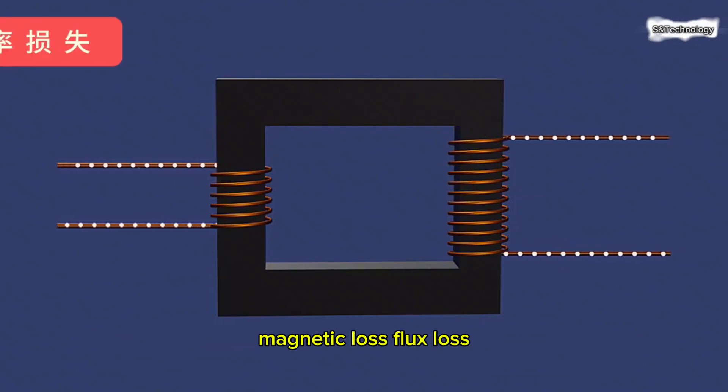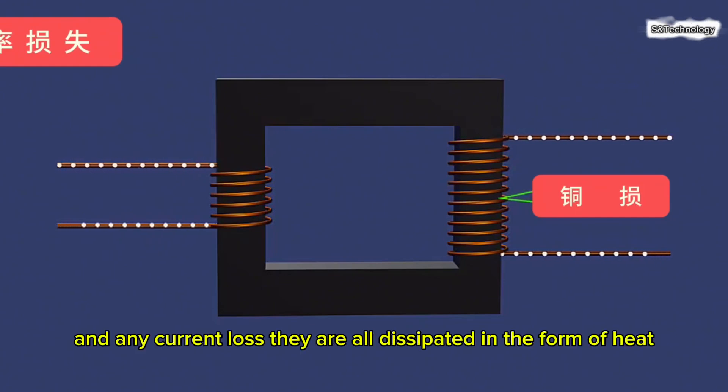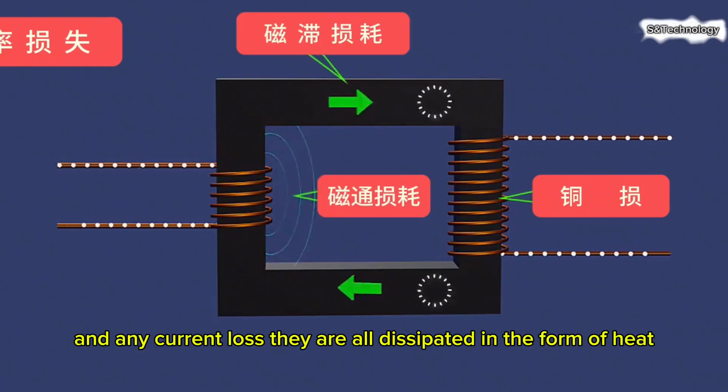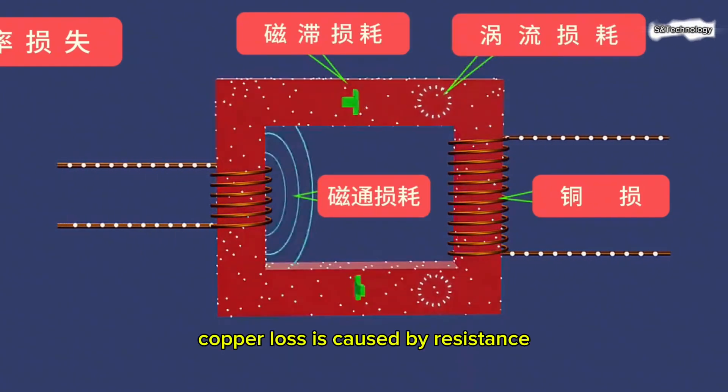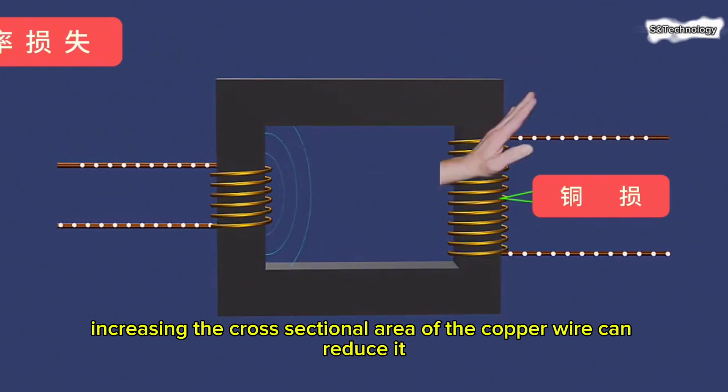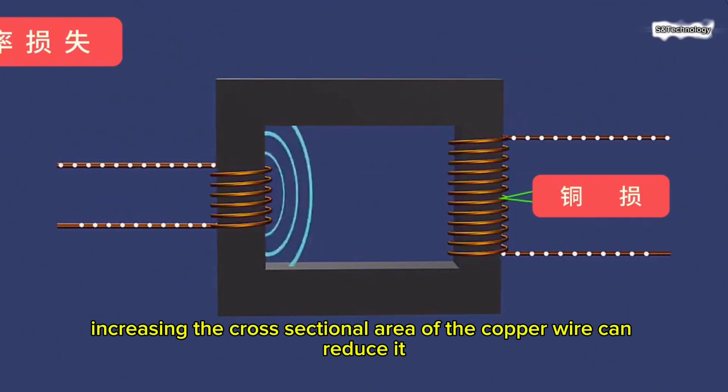Power loss includes copper loss, magnetic loss, flux loss, and eddy current loss. They are all dissipated in the form of heat. Copper loss is caused by resistance. Increasing the cross-sectional area of the copper wire can reduce it.